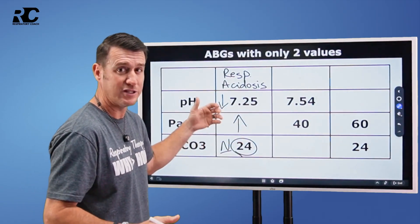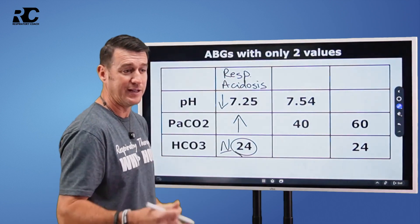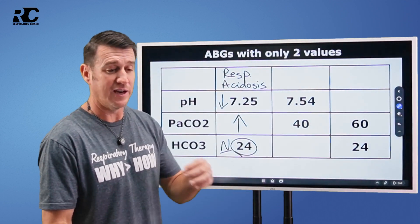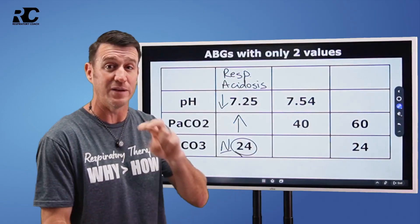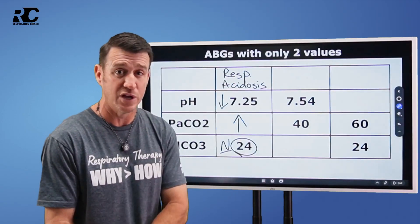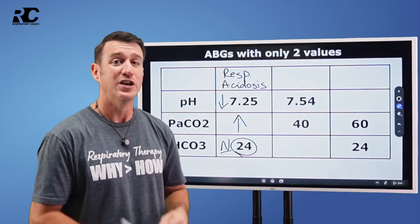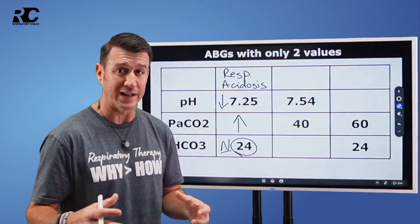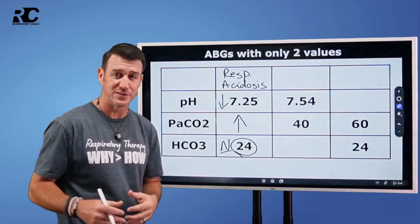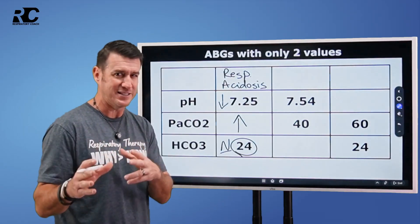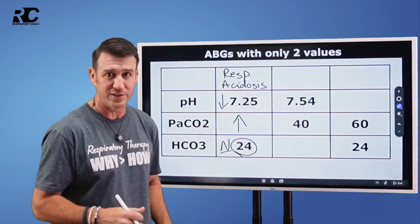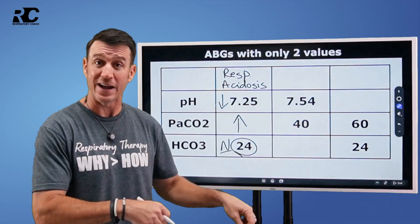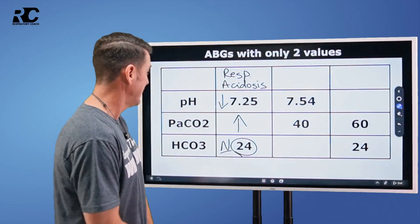I used to love doing this exercise when I was at clinicals with students — I would tell the outgoing RT to only give them two values from the ABG and let them work through it. If you want to pause this video and try the rest of them yourself, then come back and check yourself to see if you're right.